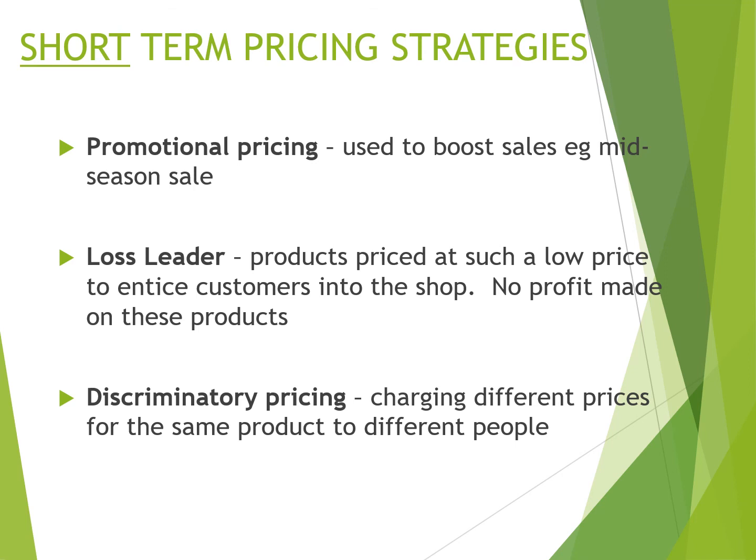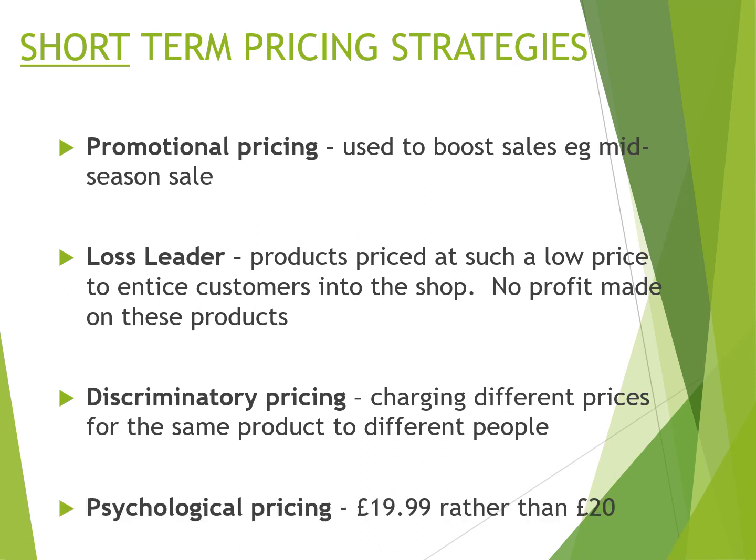Discriminatory pricing is where you charge different prices for the same product to different people or at different times. Good examples include EasyJet and Ryanair, which charge different prices for the same flight at certain times of the year or even the day — the same seat on the same Glasgow to London journey could cost different amounts. During peak hours they charge higher prices, and during off-peak hours lower prices. Companies also use this for holidays — picking a holiday during school holidays costs significantly more than travelling when schools are back.